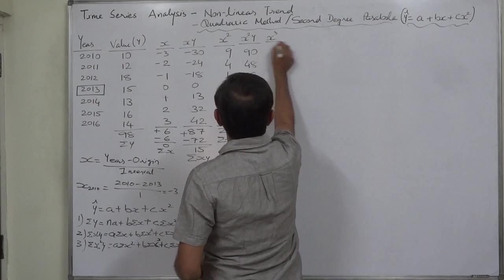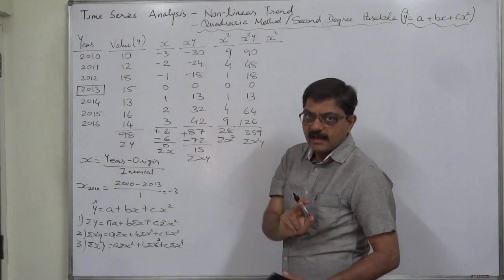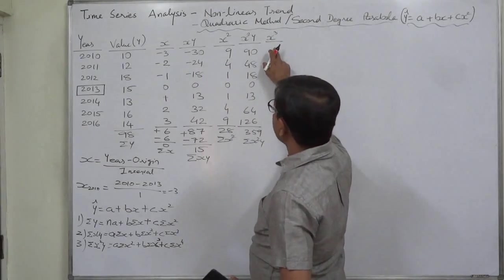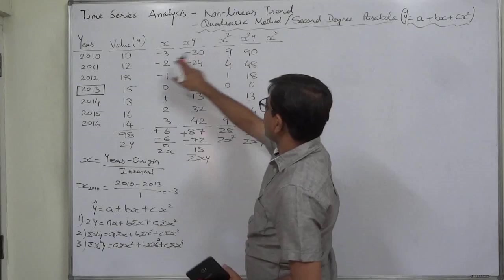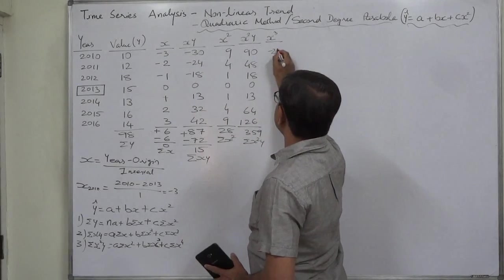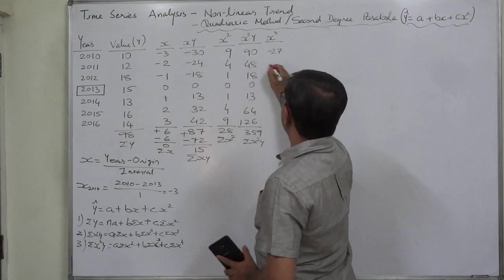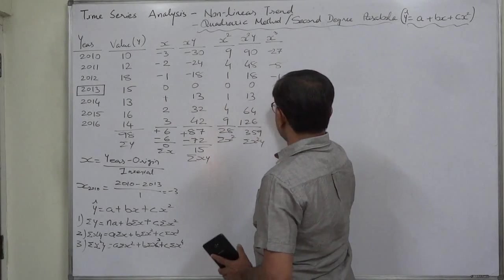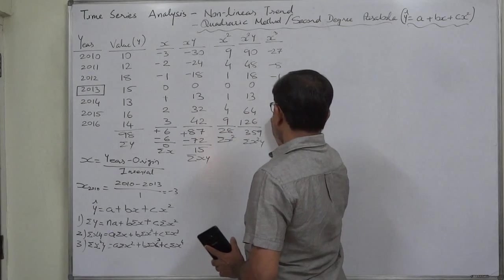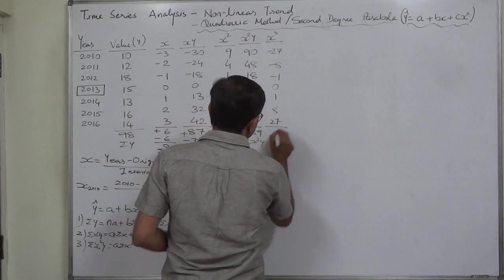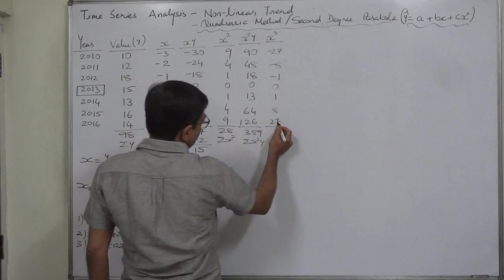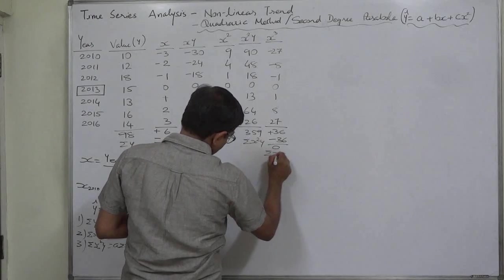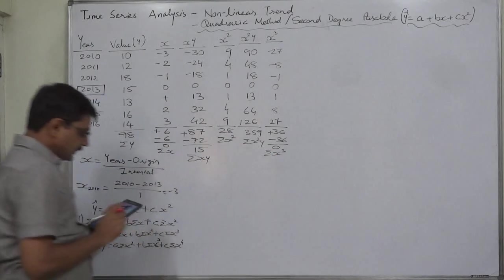Now for the x cubed column — please be careful, there can be mistakes of sign. x cubed has negative values. x cubed equals x times x squared: minus 3 times 9 is minus 27; minus 2 times 4 is minus 8; minus 1 times 1 is minus 1; 0; 1 times 1 is 1; 2 times 4 is 8; 3 times 9 is 27. The positive total is 36 and the negative total is 36, so sigma x cubed equals 0.